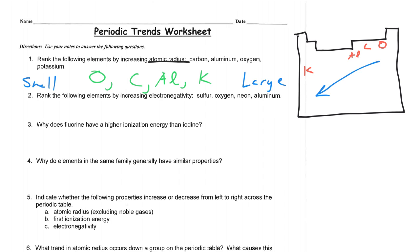Next up we've got a question about electronegativity. So again, let's draw ourselves a quick periodic table. It does not have to be perfect. Place our elements. We've got sulfur, oxygen, neon, and aluminum.